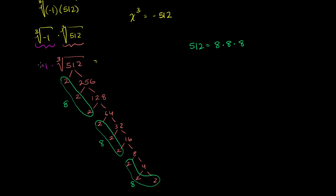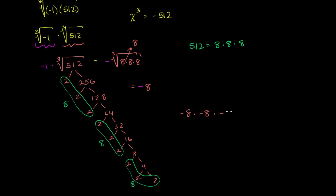So our expression becomes negative 1 times the cube root of 8 times 8 times 8. What number multiplied by itself 3 times gives 512, which is 8 times 8 times 8? Clearly, it's 8. So the cube root of negative 512 is negative 8. We can verify: negative 8 times negative 8 is positive 64, times negative 8 gives negative 512.